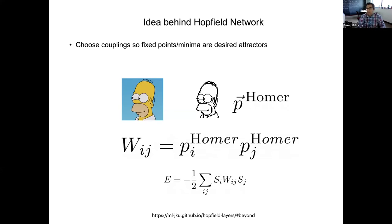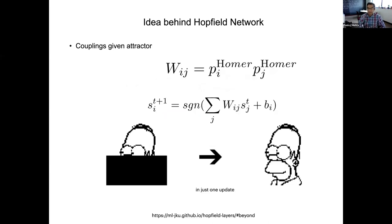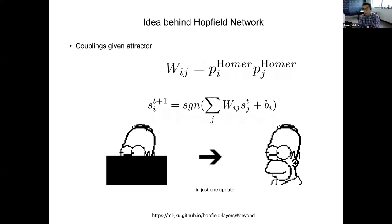I construct this energy functional and some magic happens. If I give an input which is a masked Homer and run it through the dynamics, in just one update I can reconstruct Homer. This is the idea that I give you a piece of a memory and the dynamics fills in the rest. I can fill in Homer because I constructed the interactions in the network to store Homer — like neurons where the synapses control the memory. On a more abstract level it's a very interesting inverse problem: I give you the minima I want, and I construct a dynamical system or energy landscape whose minima are the things I want to store.